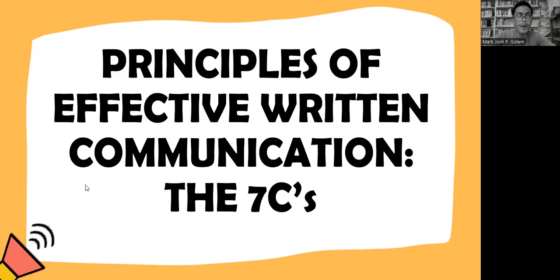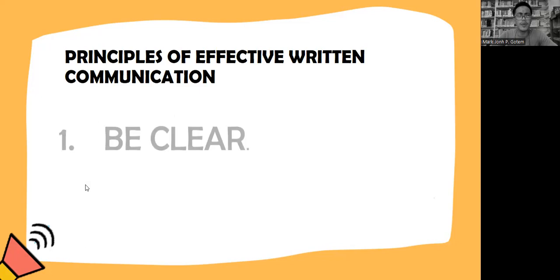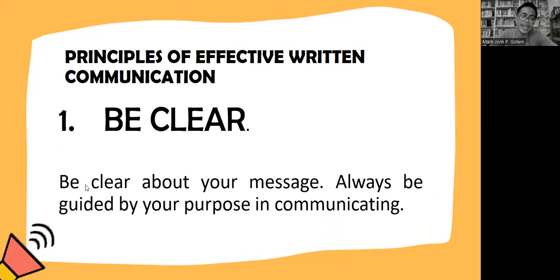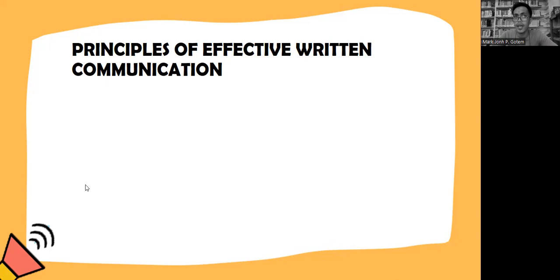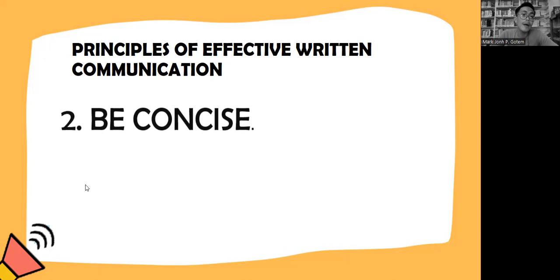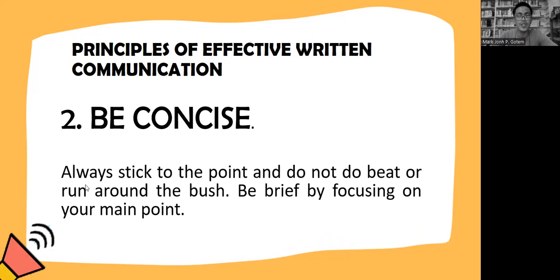Now let's proceed with the principles of effective written communication — the seven C's, which was discussed in past lessons but is relevant to today's discussion. First, be clear: be clear about your message and always be guided by your purpose in communicating. Second, be concise: always stick to the point and do not beat around the bush. Be brief by focusing on your main point.